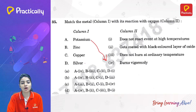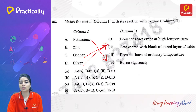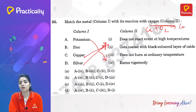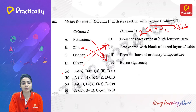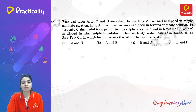Regarding metal reactivity: potassium burns vigorously (kept in kerosene), silver does not react even at high temperatures, and copper gets coated with a black layer of copper oxide when it reacts with oxygen. Zinc does not burn at ordinary temperature. So statement three only — referring to zinc — is the correct answer, option A.